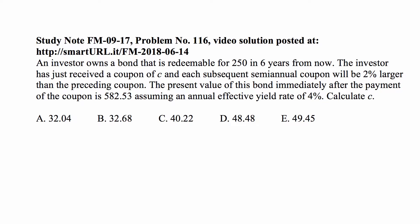The investor has just received a coupon of c, and each subsequent semiannual coupon will be 2% larger than the preceding coupon. The present value of this bond immediately after the payment of the coupon is $582.53, assuming an annual effective yield rate of 4%. Calculate c.